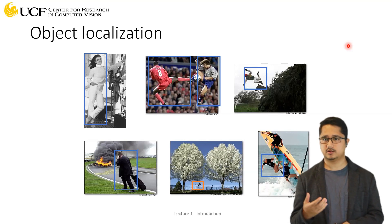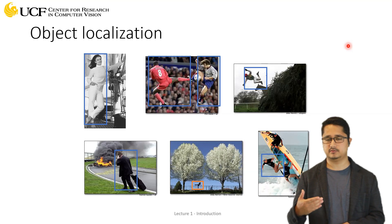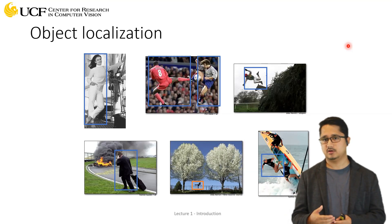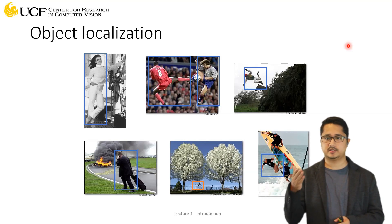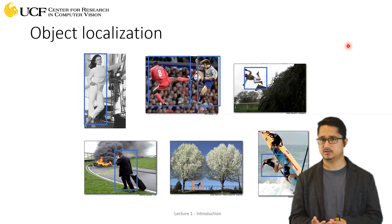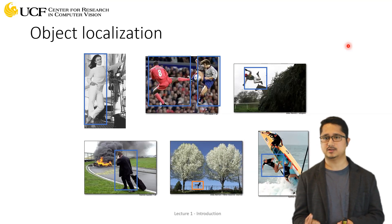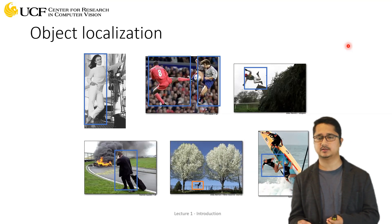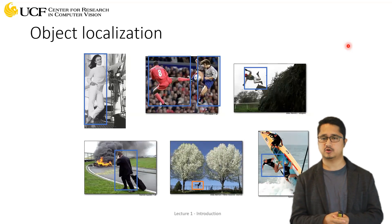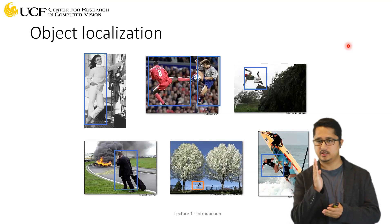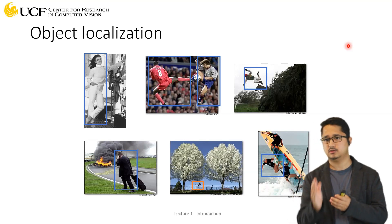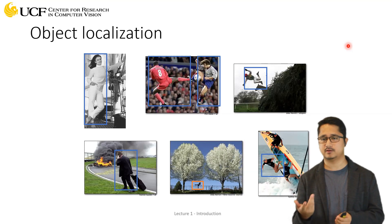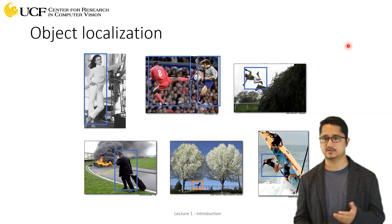For object detection, we typically use bounding boxes — a tight fit around the object. A bounding box requires just four numbers, which could be either the center of the bounding box (x, y coordinates) plus height and width, or the extreme coordinates such as the top-left and bottom-right corners of the box. Either way, four numbers are required to represent the detection.